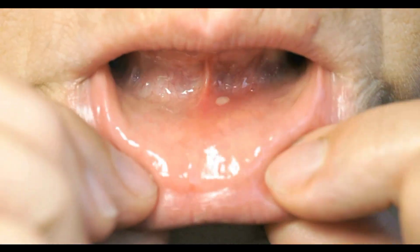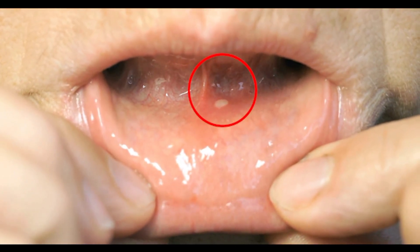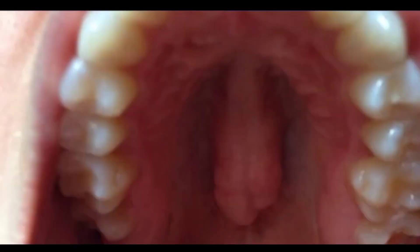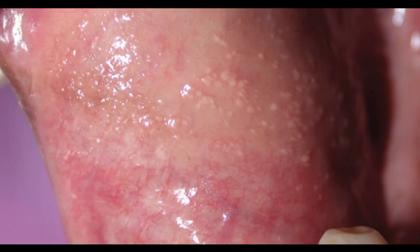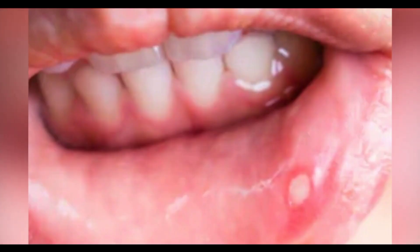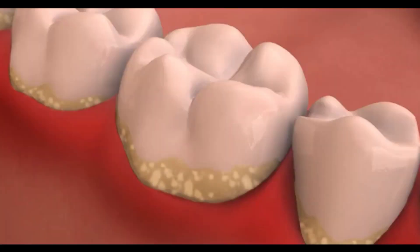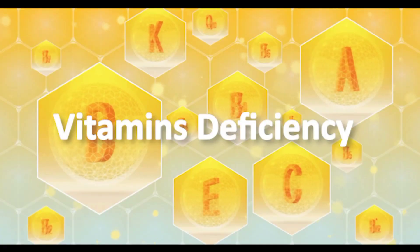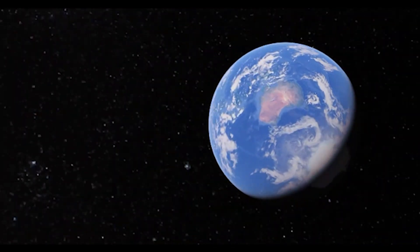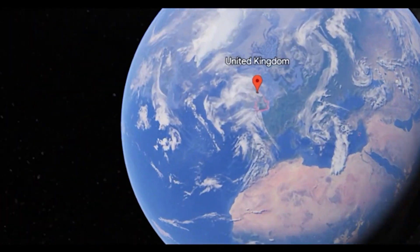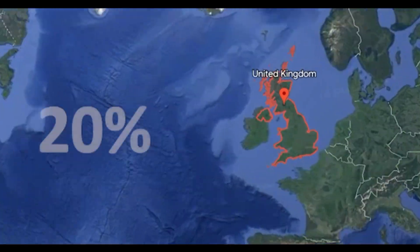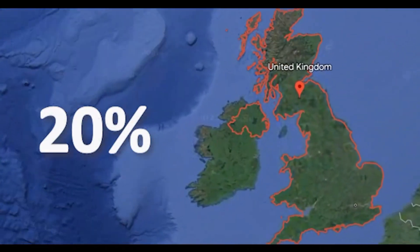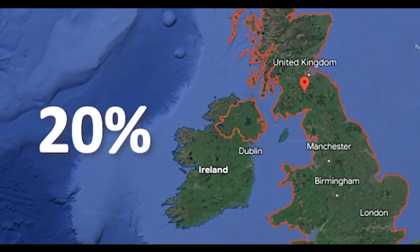Mouth ulcers usually develop on lips, gums, palate, tongue, inner cheeks, etc. Mouth ulcers mostly happen due to injury, infection, or vitamin deficiency. In the United Kingdom, almost 20% of the population is affected by mouth ulcers.